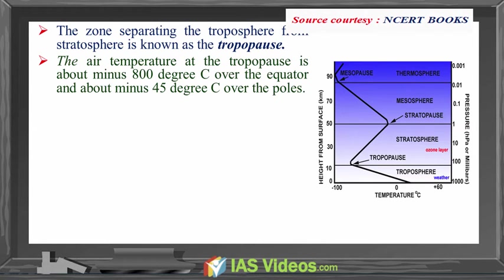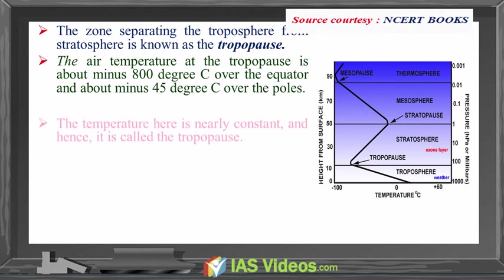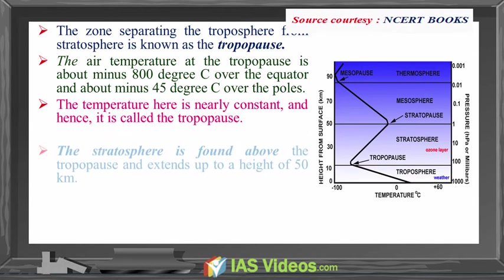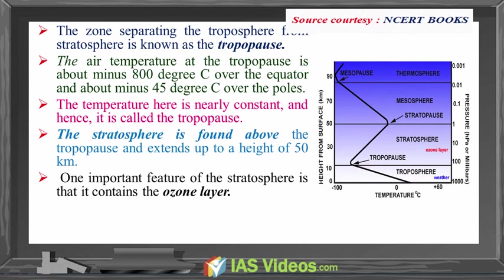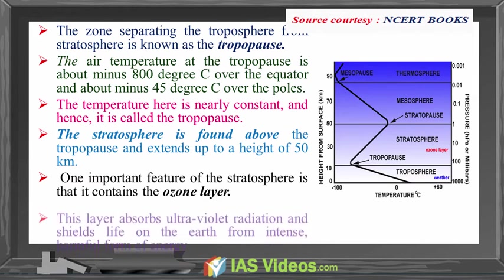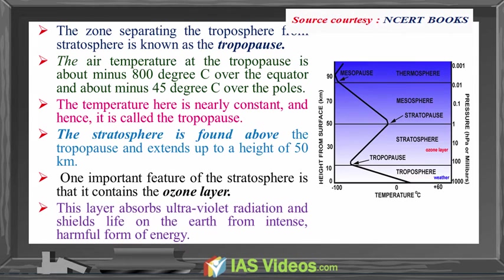The stratosphere is found above the tropopause and extends up to a height of 50 kilometres. One important feature of the stratosphere is that it contains the ozone layer, which absorbs ultraviolet radiation and shields life on earth from this intense and harmful form of energy.